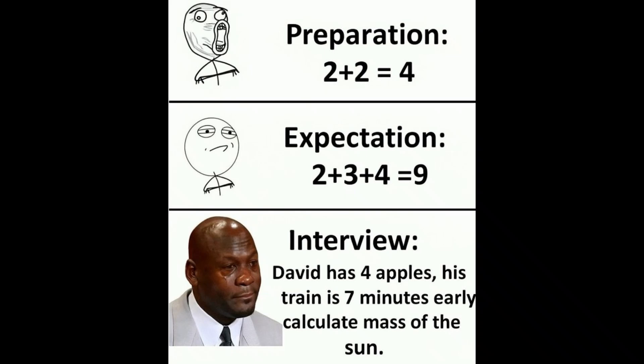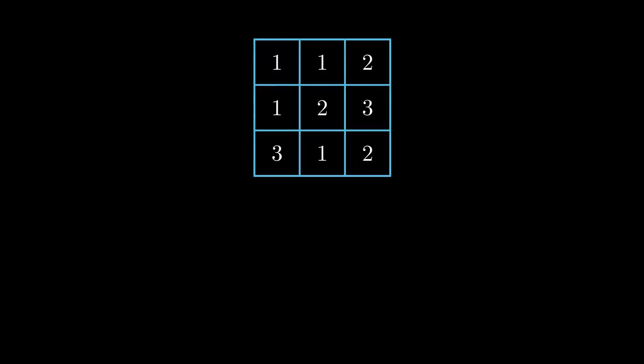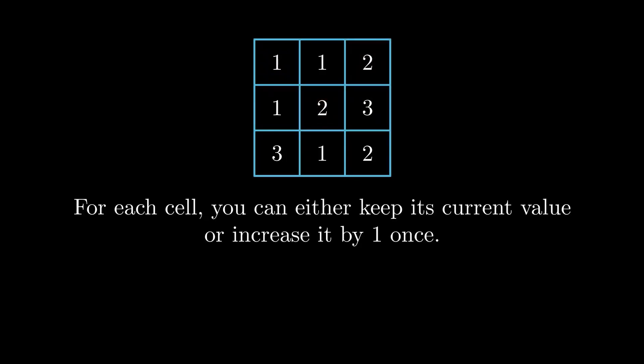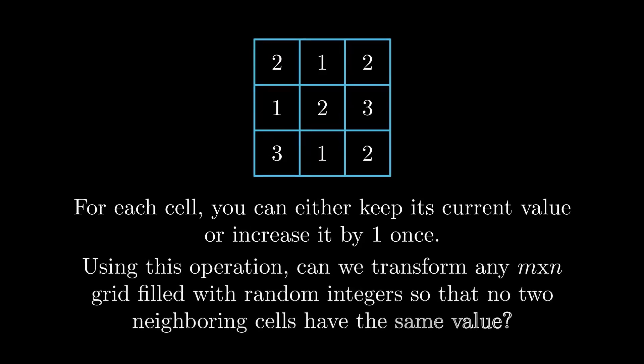For example, let's solve a problem that was asked at a top quant firm. Consider a 3x3 grid with random integers filled in the cells. Two cells are considered neighbors if they share a side. For each cell, you can either keep its current value or increase it by one once. Note that this operation can be performed at most once on each cell, and independently on each cell — so you can increase the value of some cells by one while leaving others unchanged. We want to transform the grid so that no two neighboring cells have the same value. The question is: using this operation, can we transform any m x n grid filled with random integers so that no two neighboring cells have the same value? If yes, prove it. If no, provide a counterexample. Pause the video here if you want to give it a try.